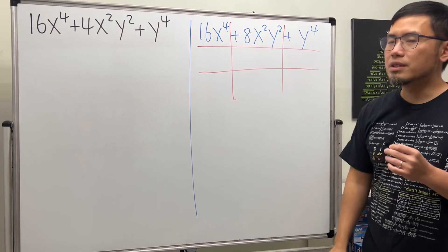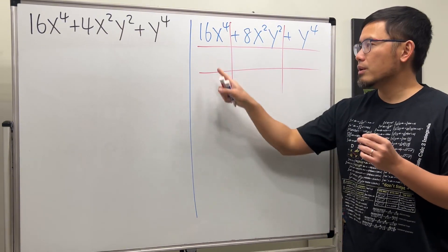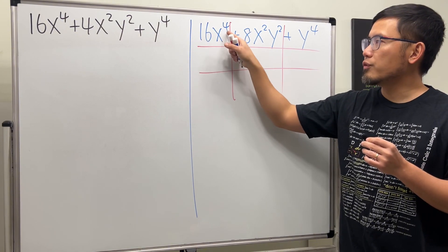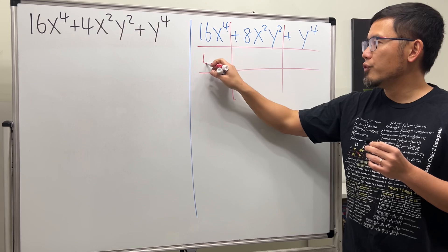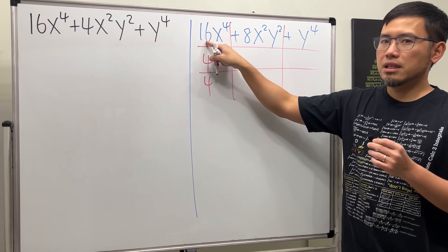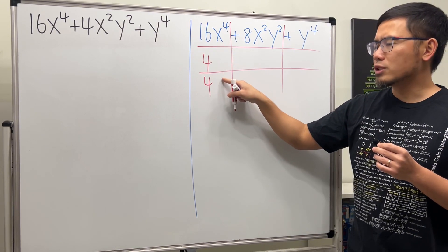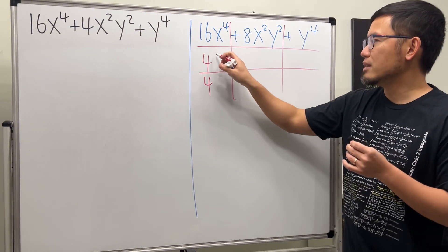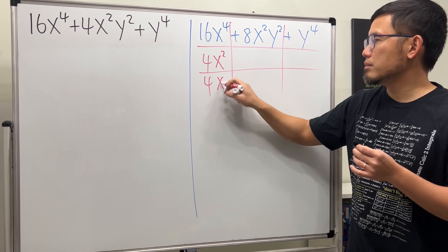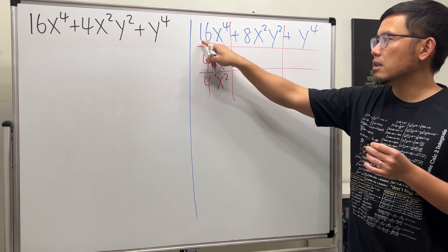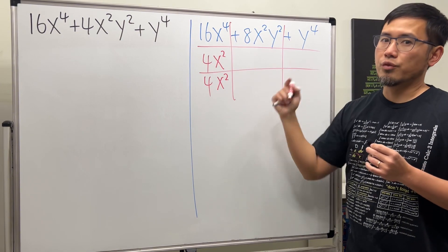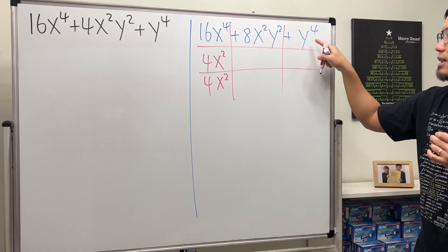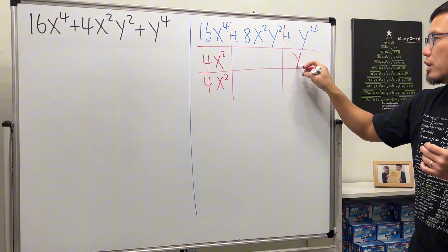Draw the tic-tac-toe boxes first. Now ask yourself: what times what gives us 16x to the fourth power? Well, 4x squared times 4x squared gives us 16x to the fourth. Then come here and ask: what times what gives us y to the fourth power? Y squared times y squared.